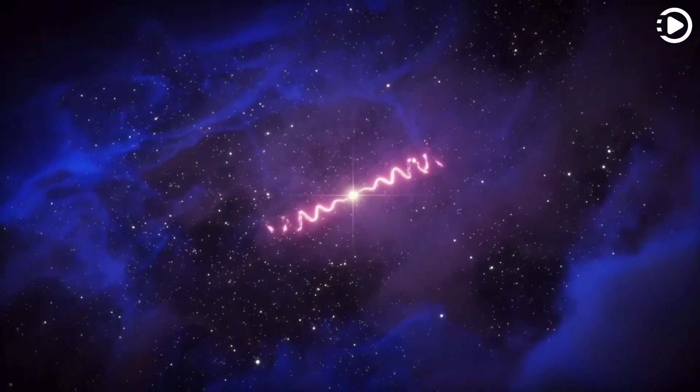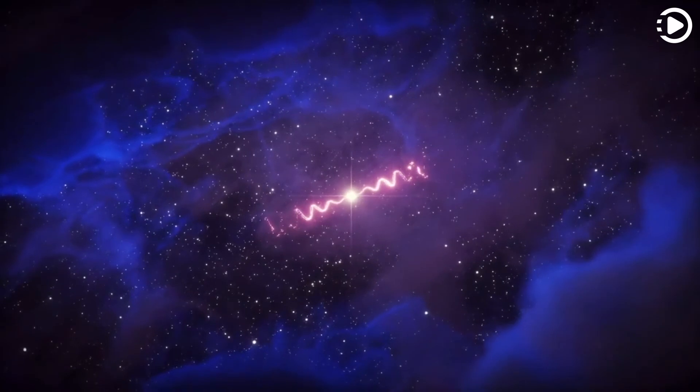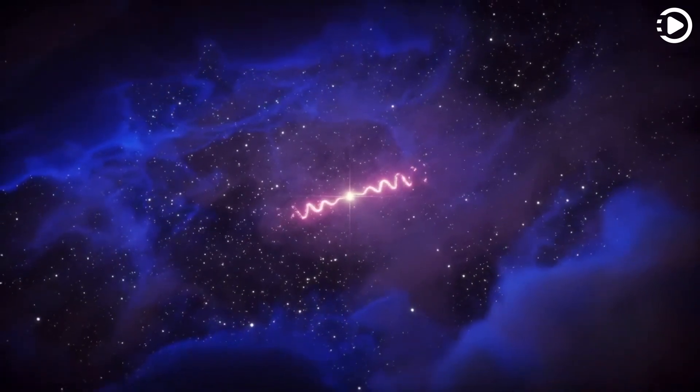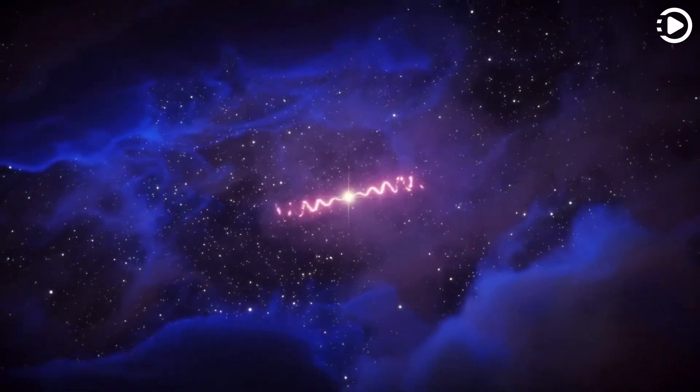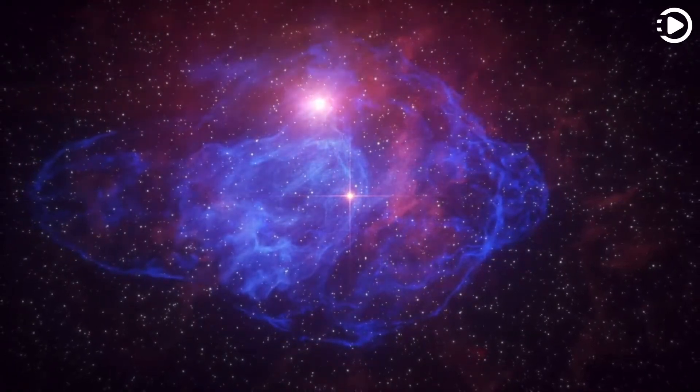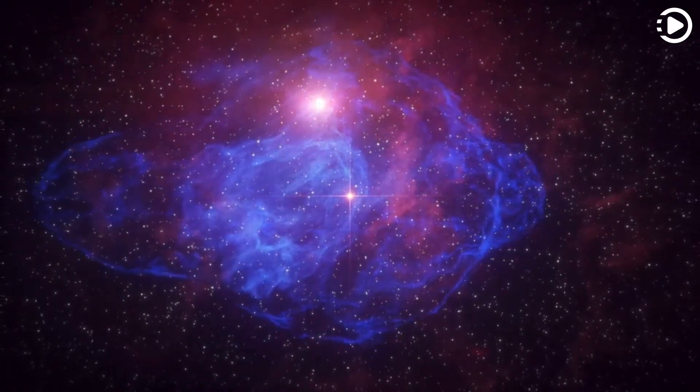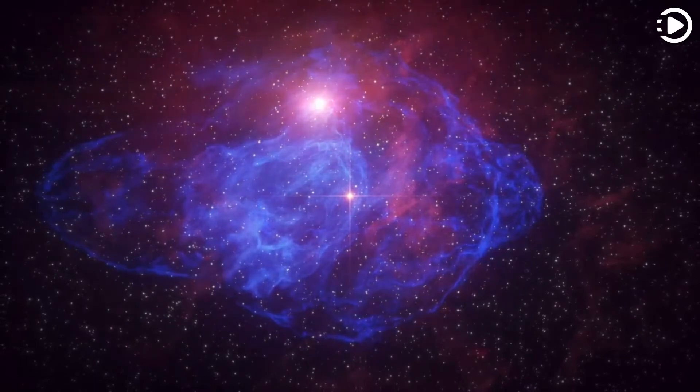The central star also blasts out jets of ionised gas in opposite directions, each at about one quarter the speed of light. The video then pans out to show a top view of the processing jets producing an expanding spiral.